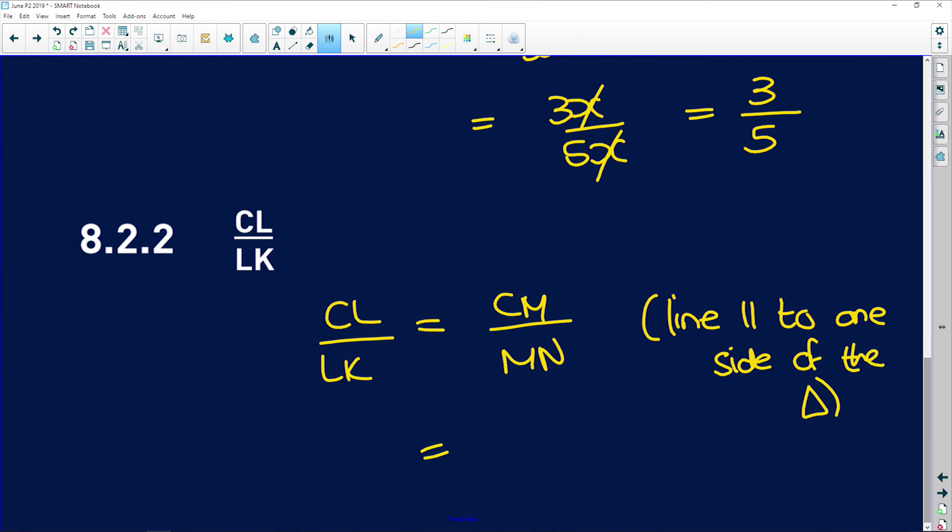And CM, remember, we said was 23Y. And MN, we found, was 4Y. The Y's are going to divide into each other. So we get 23 over 4.